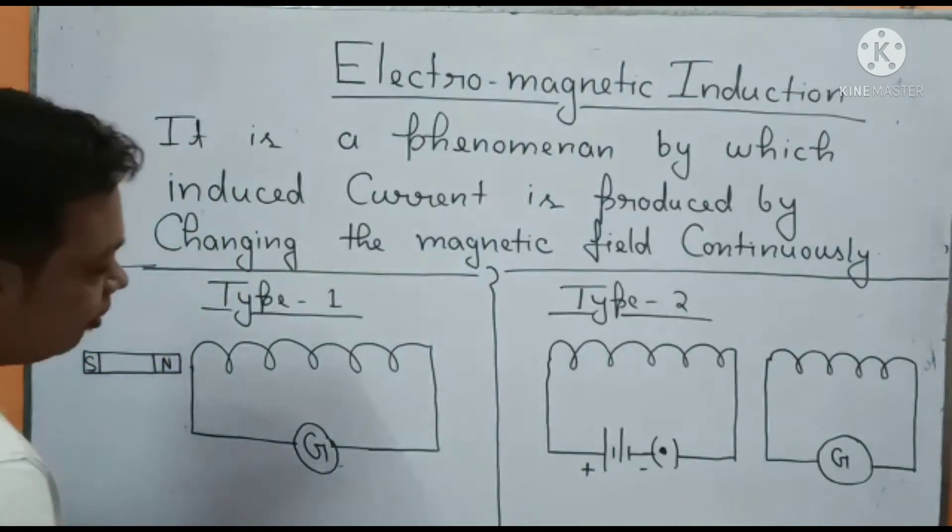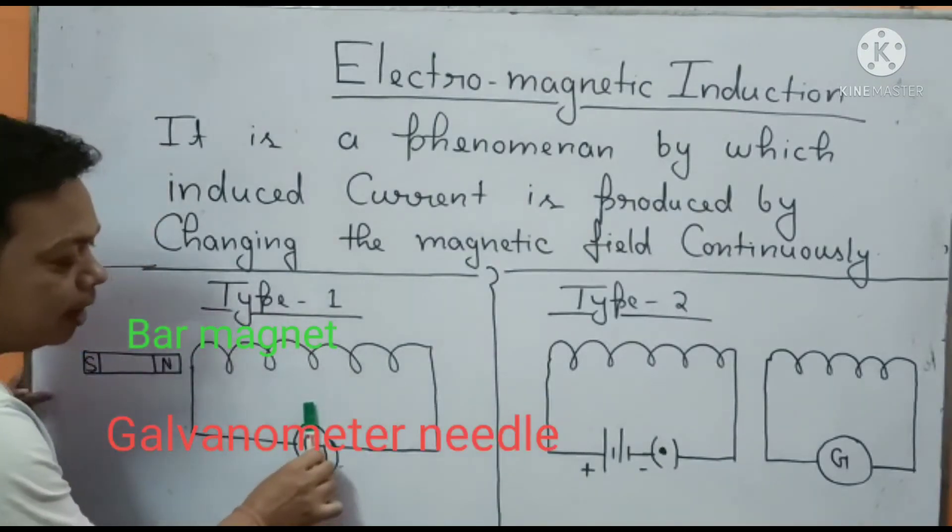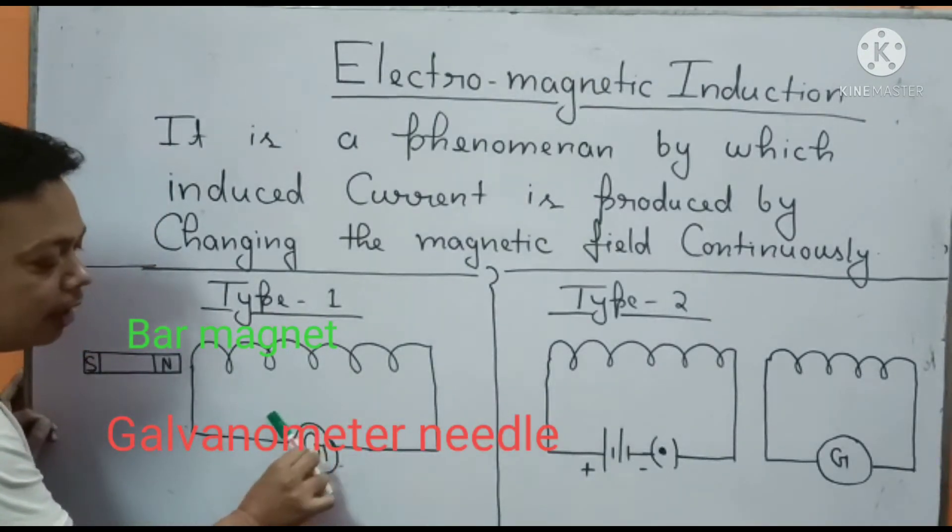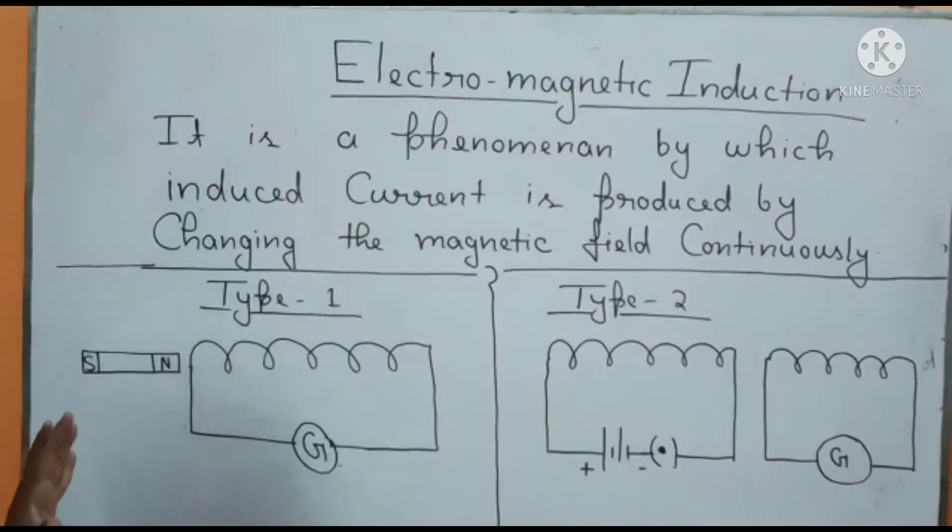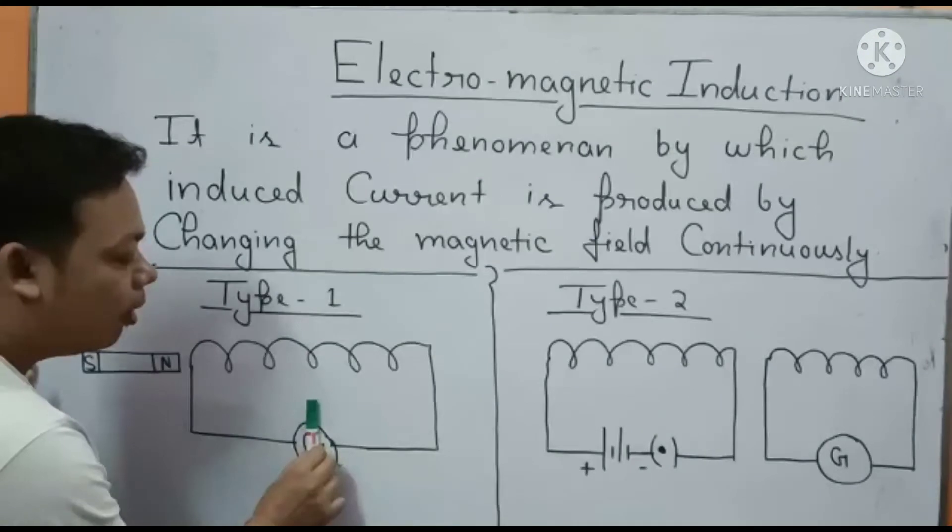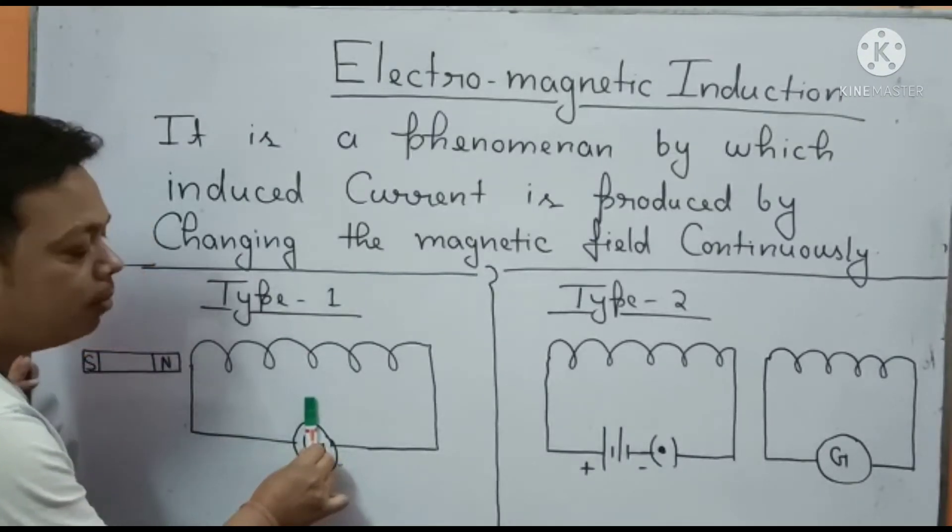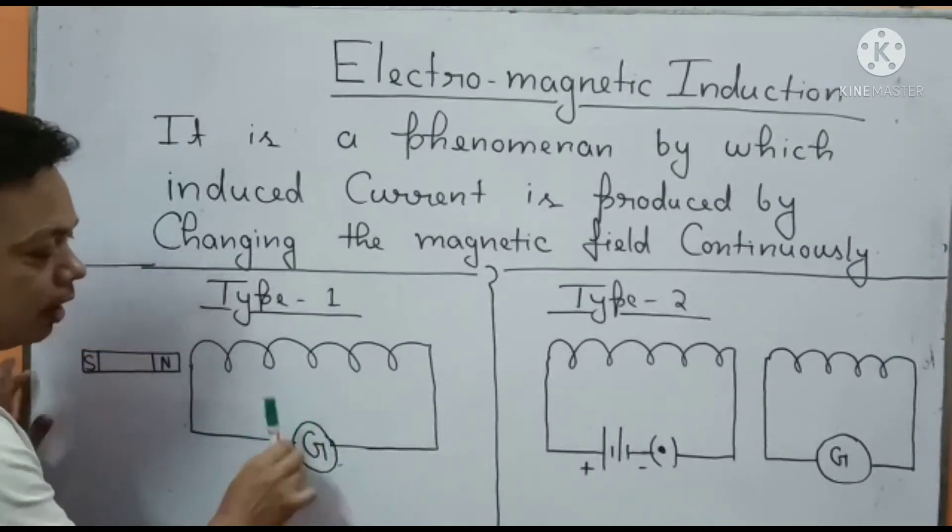Inside the galvanometer there is a needle placed which deflects when current flows through this coil. Deflection of the galvanometer needle is only possible when there is a flow of current in the circuit.